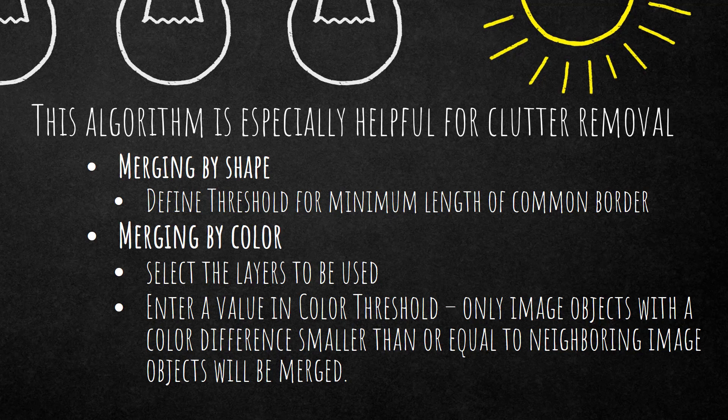The second setting is merging by color. You can select the layers to be used for this color merge and also define a color threshold — only image objects with a color difference smaller than or equal to the threshold will be merged with neighboring image objects. So it only merges into spectrally similar image objects, not based on border length. That's the main difference between these two settings.